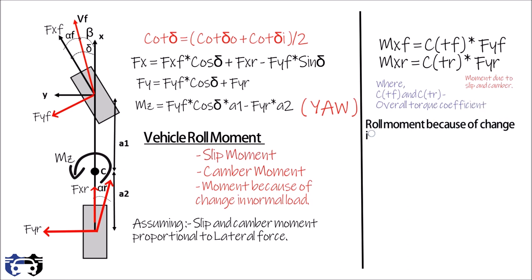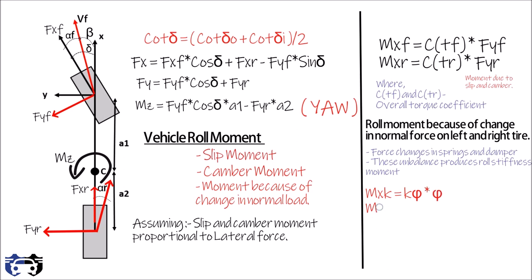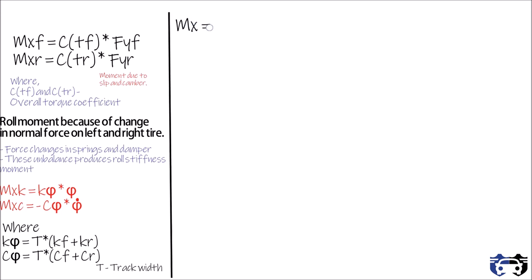Roll movement because of change in normal load on left and right tyres results in change in force in springs and damper. These unbalanced forces generate roll stiffness movement. It is given by for spring mxk equals to k phi multiply by phi and for damper mxc equals to minus of c phi multiply by phi dot where k phi equals to t multiply by kf plus kr and c phi equals to t multiply by cf plus cr where t is the track width. So the total value of roll movement is given by mx equals to mxf plus mxr plus mxk plus mxc.